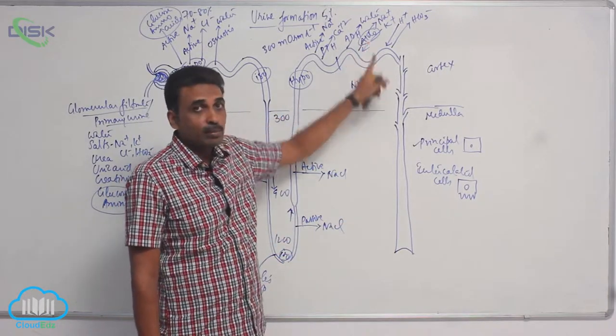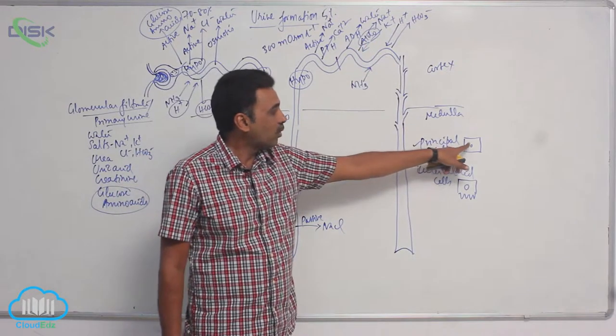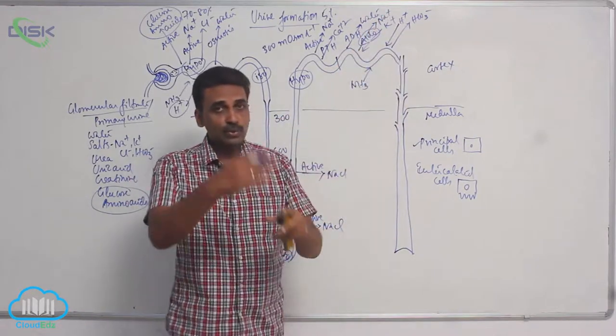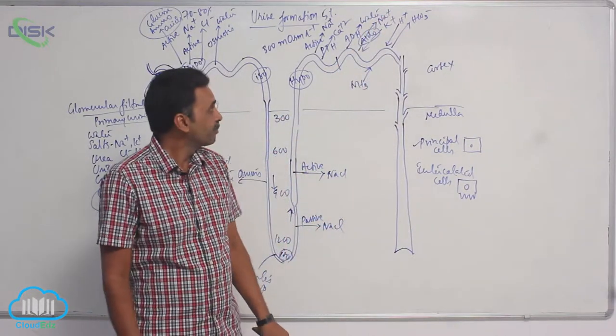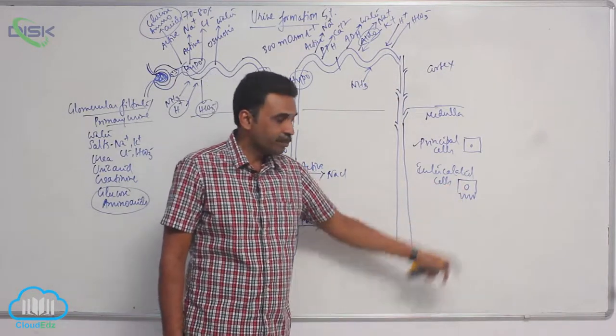Aldosterone is a hormone produced from the adrenal cortex. It also influences the principal cells. Principal cells will absorb sodium and secrete potassium. In the same area, we also have intercalated cells, which are simple cuboidal cells with brush borders.